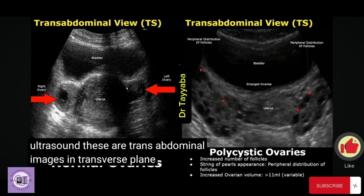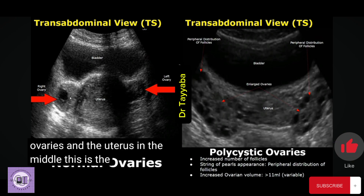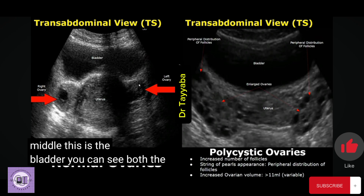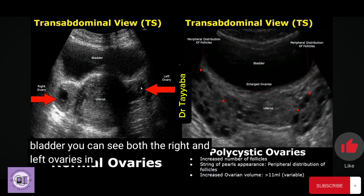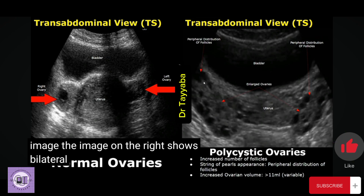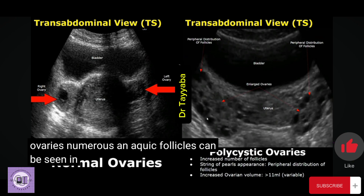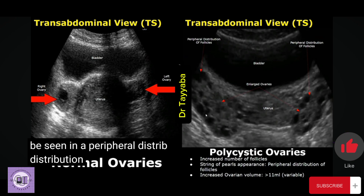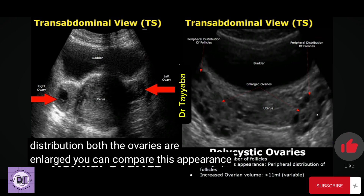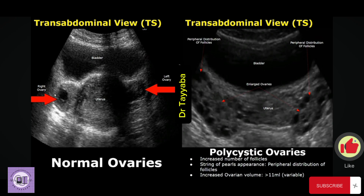These are transabdominal images in the transverse plane showing both ovaries and the uterus. In the middle is the bladder, and you can see both the right and left ovaries. The image on the right shows bilateral polycystic ovaries with numerous follicles in a peripheral distribution. Both ovaries are enlarged, and you can compare this with the normal ovaries on the left.